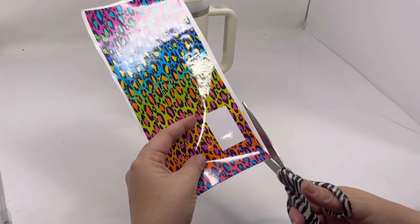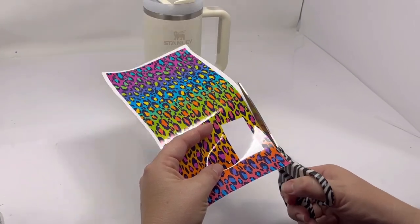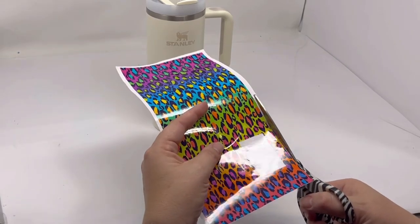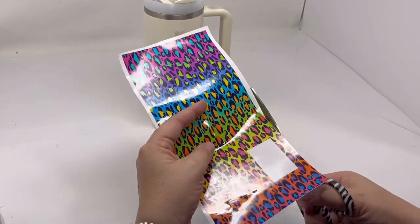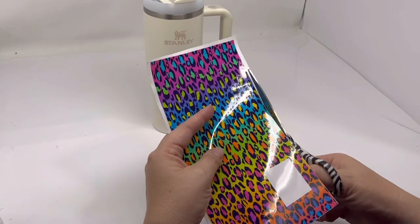And then I do the top line here so that I can make sure I have a nice straight line that lines up with the silver part of the tumbler. So we're going to just cut this part out.